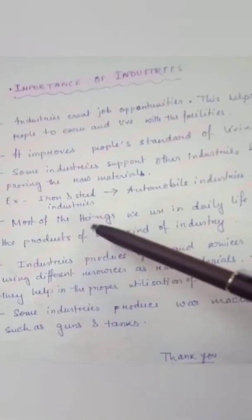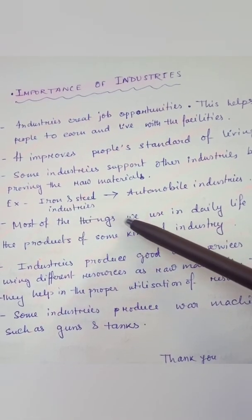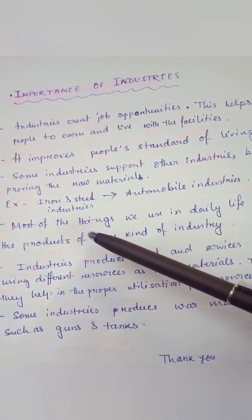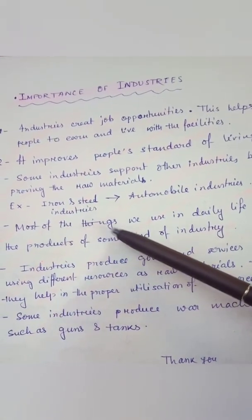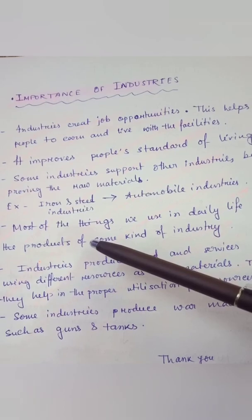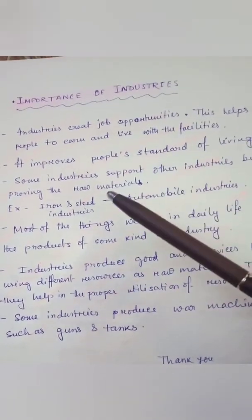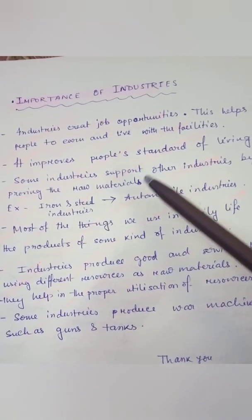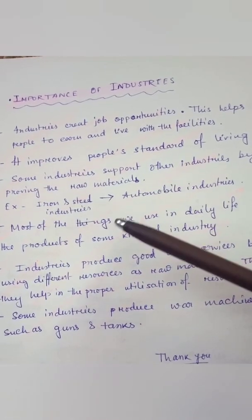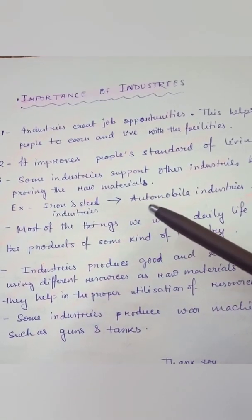Fourth, most of the things we use in daily life come from different industries. From morning to night, whatever we use comes from industries. In the morning we brush our teeth using toothpaste and a brush; gradually, think about pens, pencils, paper, and even food. We get all these products from the market, but they reach the market after processing, and that processing happens in industries.